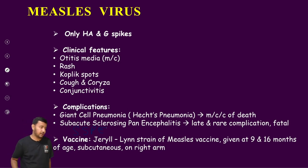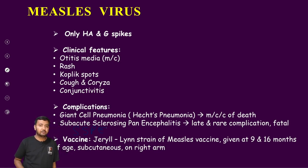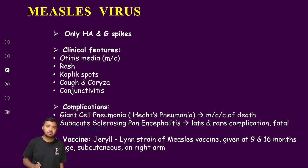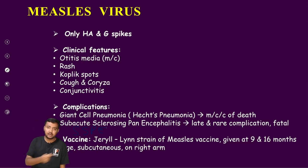The vaccine given is the Edmonston-Zagreb strain of measles. It is given at 9 months for the first dose, and the second dose at 16 to 24 months. It is given by the subcutaneous route, on the right arm.